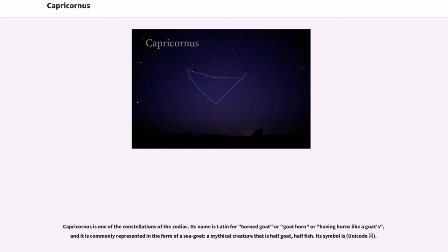Capricornus is one of the constellations of the zodiac. Its name is Latin for horned goat or goat horn or having horns like a goat's, and it is commonly represented in the form of a sea goat, a mythical creature that is half goat, half fish. Its symbol is Capricorn.